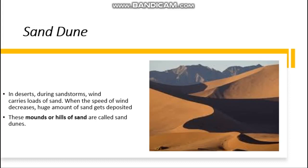First one is sand dune. In Tamil we say manal made. On seeing this picture, you can find how it looks. Mostly sand dunes are seen in the desert area, where there are no plants or trees. When the wind blows strongly, sand dunes form. In the desert, strong winds carry loads of sand. When the speed of the wind decreases, huge amounts of sand get deposited. These mounds or hills of sand are called sand dunes.